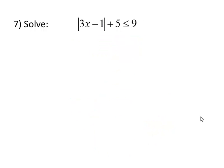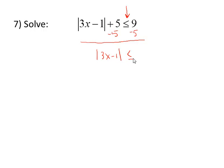Here we have an absolute value inequality, and we want to take note that we're going to have an absolute value less than a positive number. That's the type of absolute value inequality we trap. Just as with the equations, we do need to isolate the absolute value first, so I'll subtract 5 from both sides. The absolute value of 3x minus 1 is less than or equal to 4. Now we can trap this expression between negative 4 and positive 4. If it has an absolute value that's less than or equal to 4, then it's either a positive number less than 4, zero, or a negative number greater than negative 4, and we can tie those all together with this inequality.